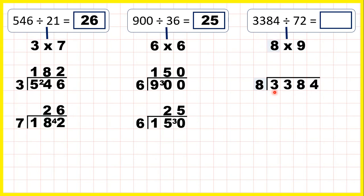So to start, we have 3384 divided by 8. Taking the first two digits together, 33 divided by 8 is 4 remainder 1, 18. 18 divided by 8 is 2 remainder 2, and 24 divided by 8 is 3.